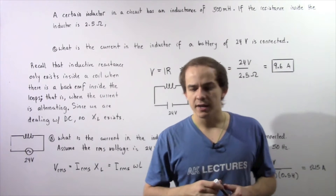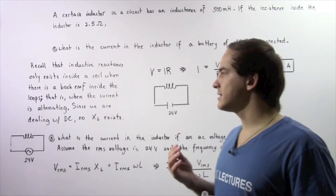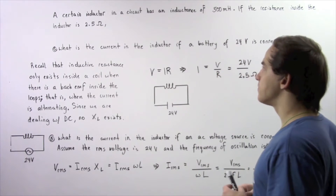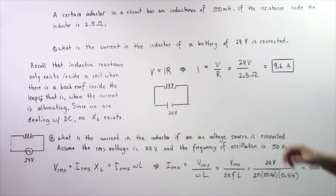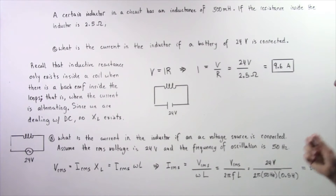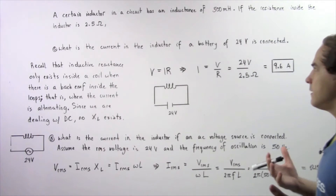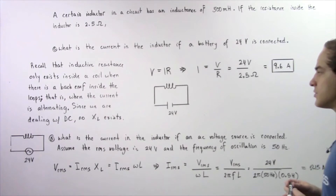In the previous lecture, we discussed the concept known as inductive reactance. Now let's look at an example that deals with that concept. Suppose a certain inductor in a circuit has an inductance of 500 mH. Now if the resistance inside the inductor is 2.5 ohms, in part A, what is the current in the inductor if a battery of 24 volts is connected to our circuit?